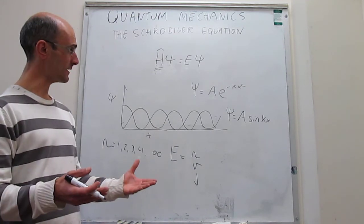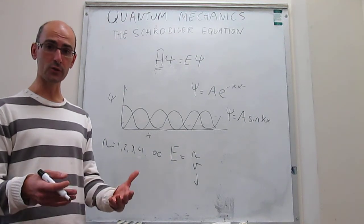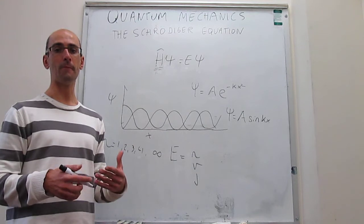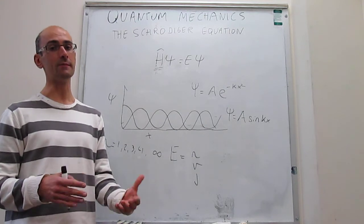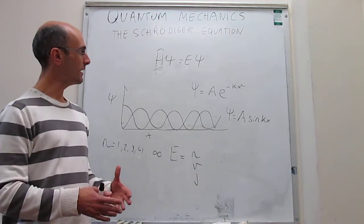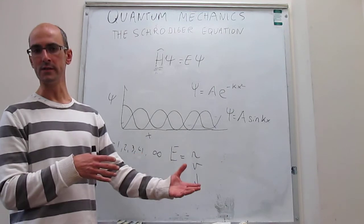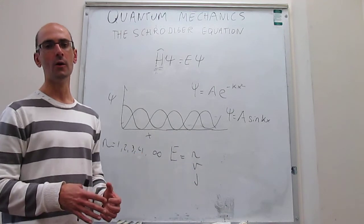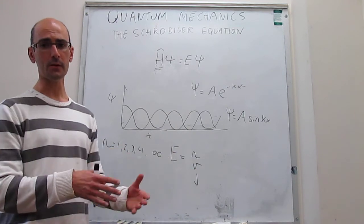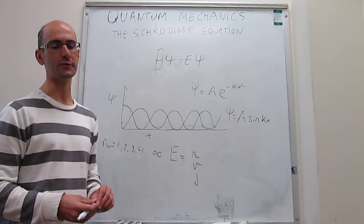This is essentially an introduction to the Schrödinger equation, which we will use to understand the behavior of quantum particles like electrons and atoms. This is just an introduction — we're going to see how all of these terms play out when we apply the equation to model systems coming up in future videos.